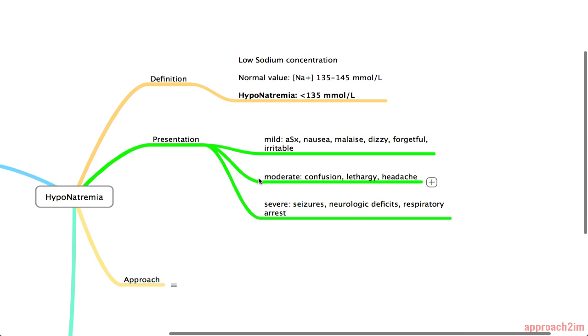There's a constellation of symptoms associated with hyponatremia. In mild cases you can be totally asymptomatic or you can have nausea, malaise, dizziness, forgetfulness or irritability. In moderate cases they present with confusion, lethargy and headache and in severe cases you can have seizures, neurologic deficits and respiratory arrest.